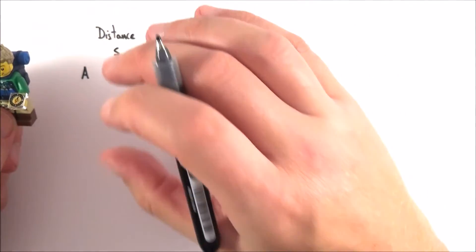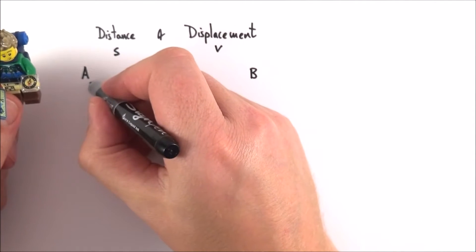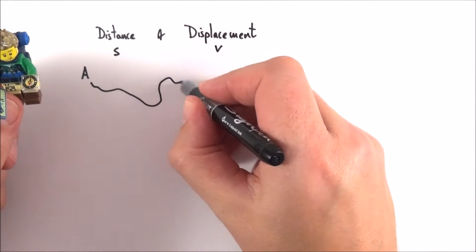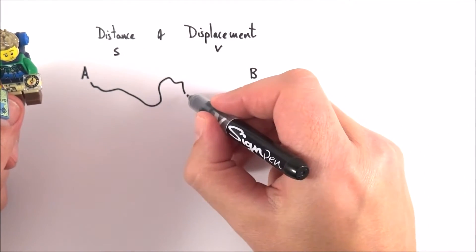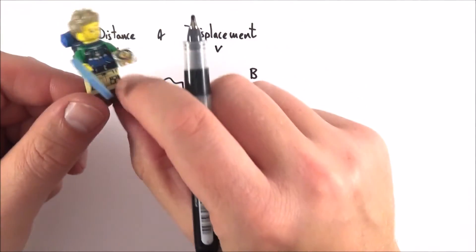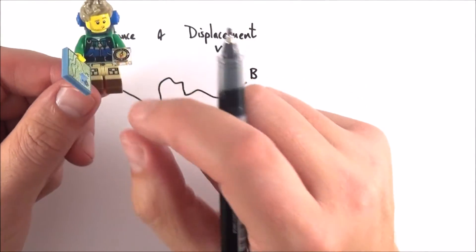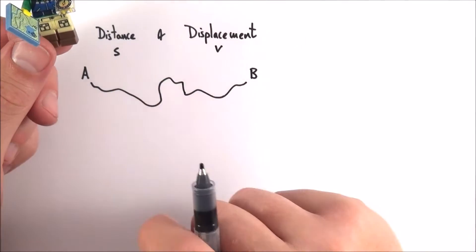Although we often use these words interchangeably they do have particular meanings. Now perhaps the route that this person took was something a bit like this as they walk around, they follow trails, they come to junctions, they cross over streams and basically this is the distance that they've walked. That's actually how far their legs have moved and the amount of meters that they've covered. And often this is quite a big number.